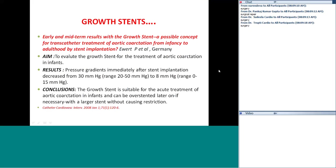A study from Germany evaluated growth stents for treatment of aortic coarctation in infants. Pressure gradients immediately after stent implantation decreased from 30 to 8 mmHg. The conclusion was that the growth stent is suitable for acute treatment of aortic coarctation in infants and can be overstented later with a larger stent if necessary, without causing restriction.